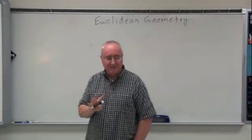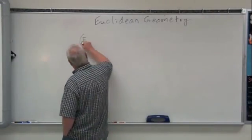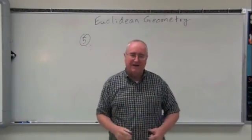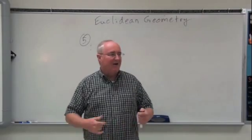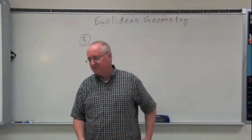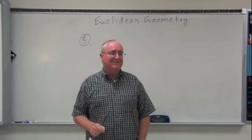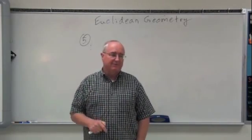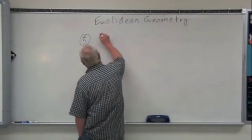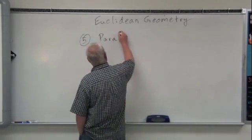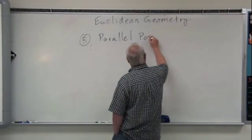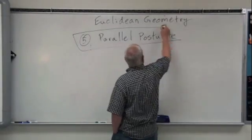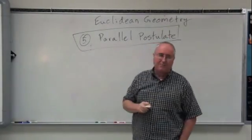The first four postulates we just stated, now we're going to work on the fifth. This fifth is the one that everybody started challenging right from the beginning. However, no serious challenges were mounted until the 19th century — 1,900 years passed before there was a serious challenge. The fifth one is called the parallel postulate, and you need to be able to relate it to the fifth postulate as the parallel postulate.